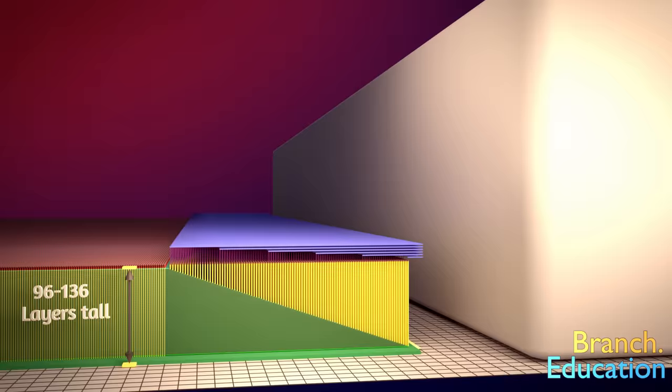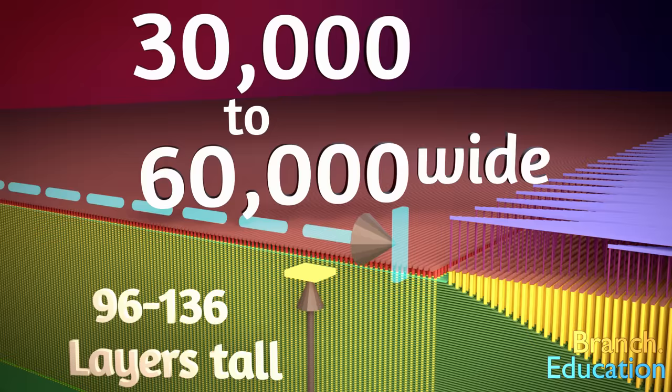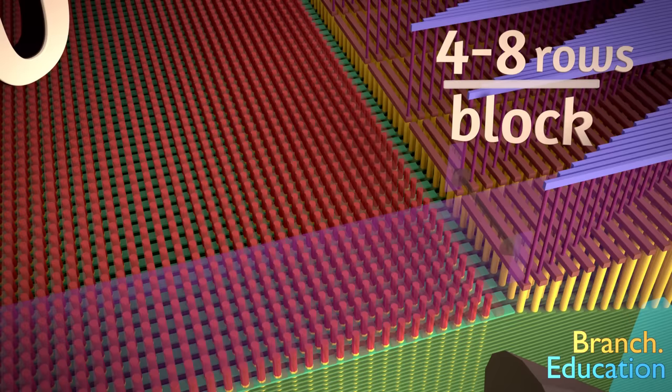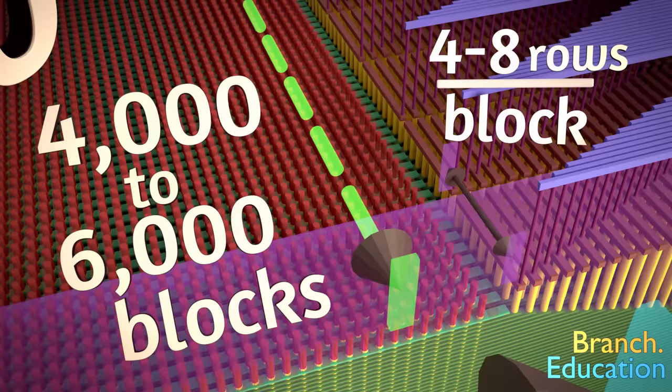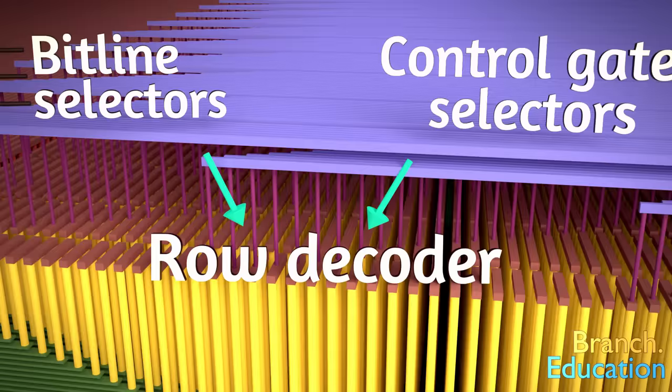Now that we understand the height, let's think about the width. A page is around 30,000 to 60,000 adjacent memory cells wide. That means there are 30,000 to 60,000 bit lines in our information superhighway. Blocks are every four to eight rows, and there are around 4,000 to 6,000 blocks. Along the edges are the control gate selectors and the bit line selectors on the other side. Together they comprise what is called a row decoder. And by using both sets of selectors as traffic lights, we're able to access a single page.